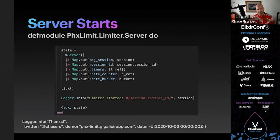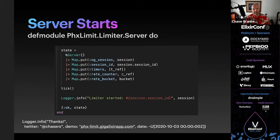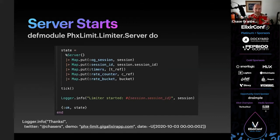Then we set our state, which includes the session, the session ID, a reference for the timer — currently just one timer but you could have multiple — the rate counter reference, and the bucket, which is our list of 60 items. Then we set the tick: every second this process looks at the current count and does some work.